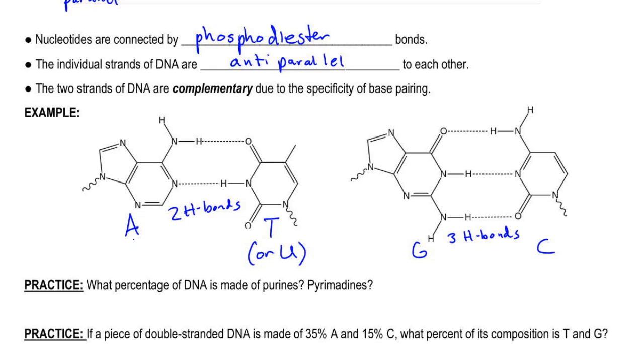Now, because certain nitrogenous bases pair only with certain other nitrogenous bases—adenine, thiamine, guanine, and cytosine—because of this, if we know the code along one strand of DNA, we can figure out what the code on the other complementary strand would be. And that's the word we use to describe this relationship, that the two strands are complementary. Because an A at one location on one strand is going to be a T at the same location on another.